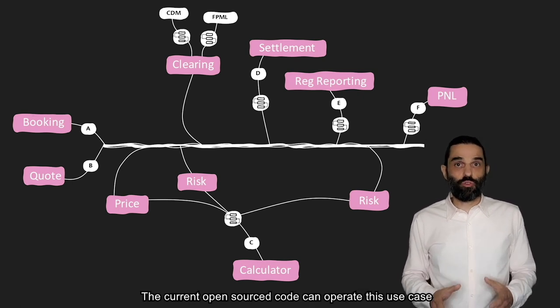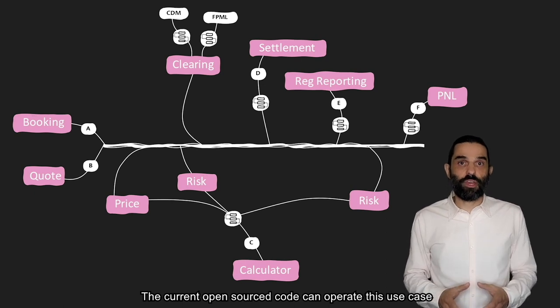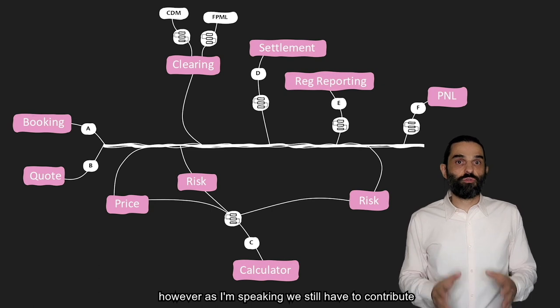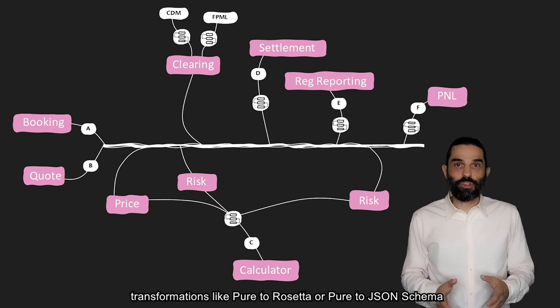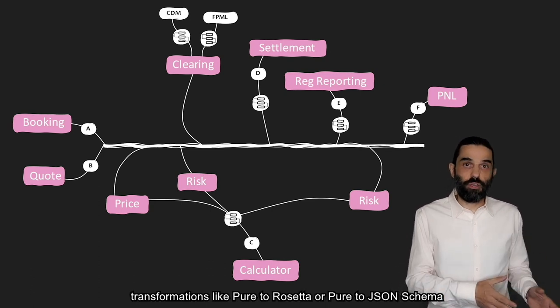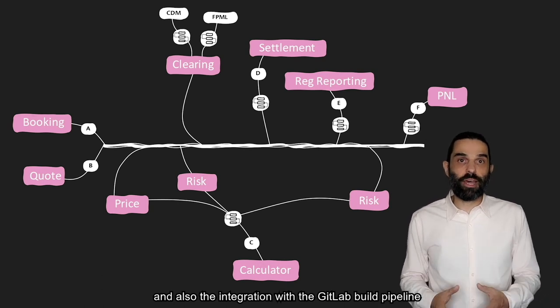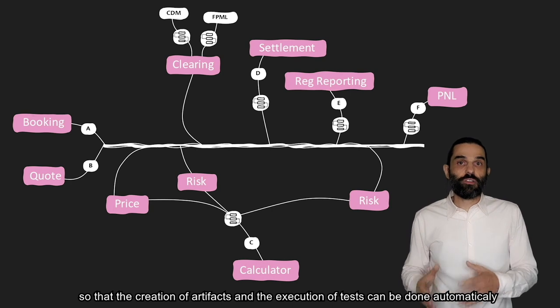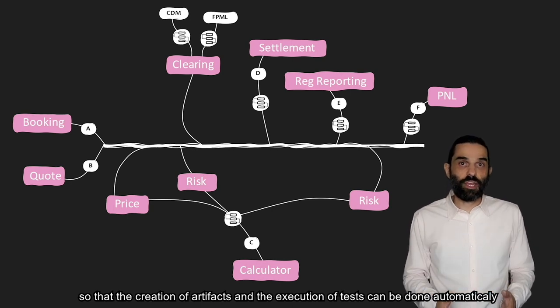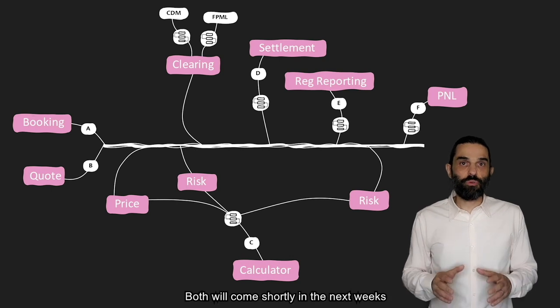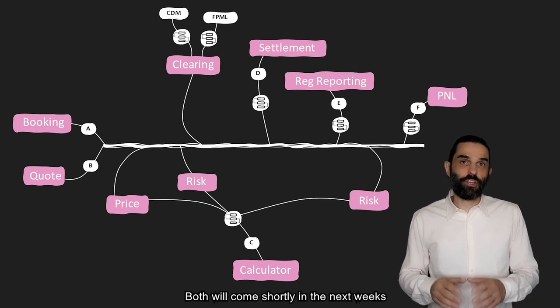The current open source code can operate this use case. However, as I'm speaking, we still have to contribute transformations like Pure to Rosetta or Pure to JSON schema, and also the integration with the GitLab build pipeline so that the creation of artifacts and the execution of tests can be done automatically. Both will come shortly in the next weeks.